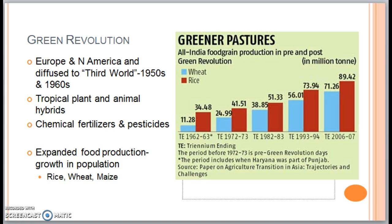The Green Revolution began with agricultural experiments funded by U.S. charities trying to improve Mexico's wheat production and reduce hunger in that region. Scientists found new hybrid strains of wheat, maize, and rice that were higher-yielding, capable of producing more food at a faster pace. They also developed new fertilizers and pesticides that supported higher-yielding seeds requiring special nitrogen-enriching fertilizers and increased protection from diseases and pest infestations.